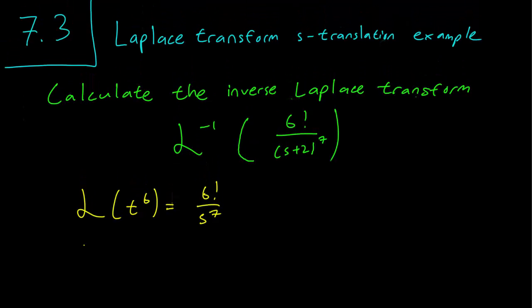So let's write this down. So in this case f(t) is equal to t^6 and this corresponds to capital F(s) equals 6 factorial over s^7.